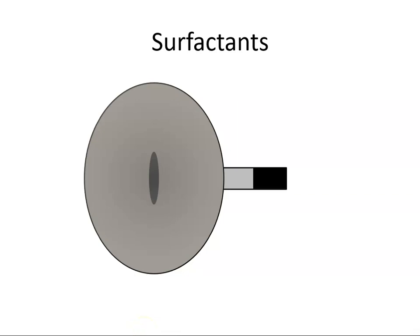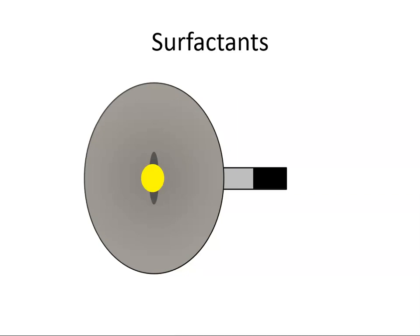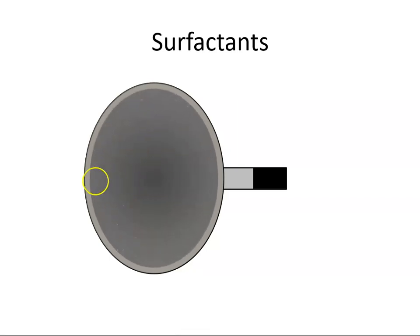A surfactant is a surface acting agent and they act to break the surface tension of, in our case, water to fuel interface. We've all seen them before — imagine a frying pan you've just put into the sink with some water in it. The water becomes discoloured with grease, and then you put a little drop of washing up liquid in and all the grease separates away from the water. That's a surface acting agent.